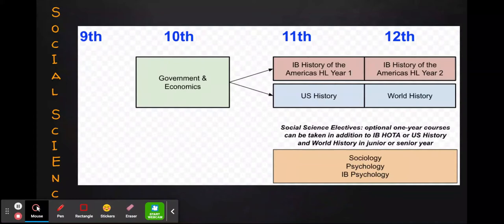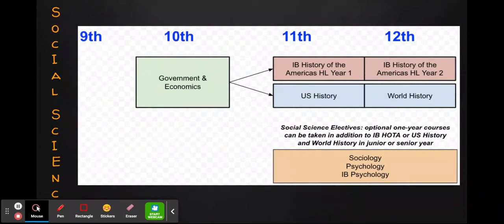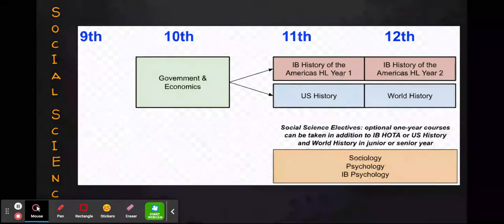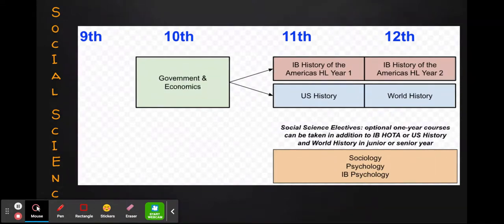Let's start with Social Science. All students are required to take three years of Social Science for graduation and this starts in the 10th grade. All sophomore students take government and economics in the 10th grade. Moving into the junior and senior year, students will have a choice. They can take either IB History of the Americas HL Year 1 and 2, or U.S. History and World History. IB History of the Americas HL is a two-year course spanning junior and senior year and is the more advanced option. In either case, students will be well prepared coming out of government and economics to take either path.